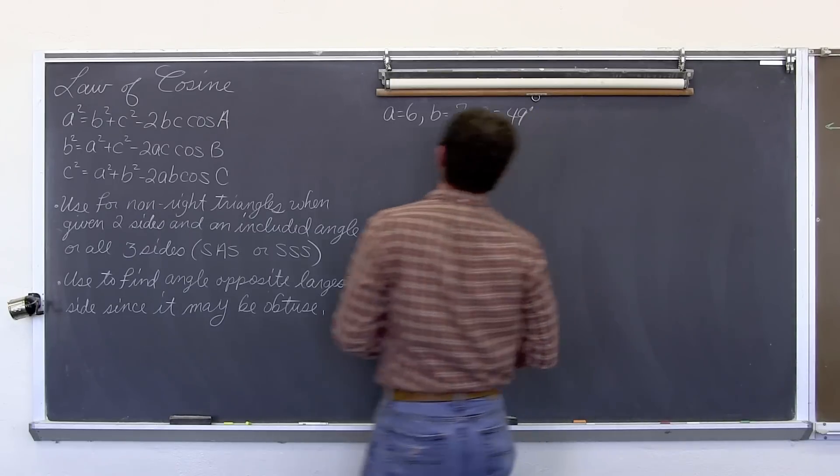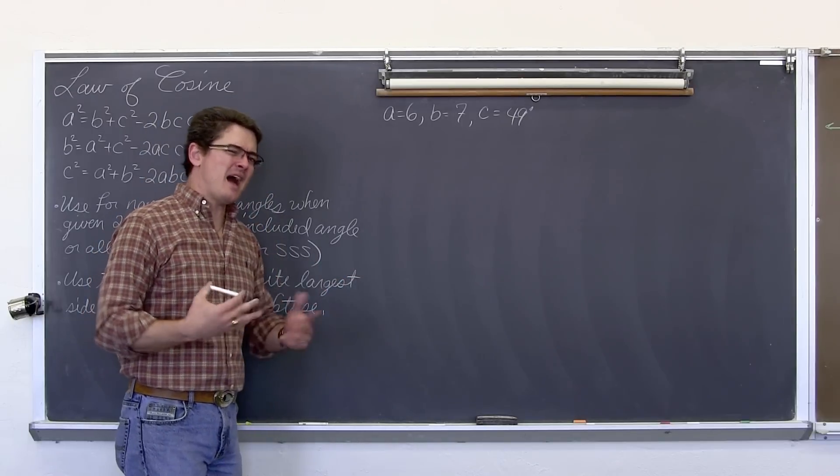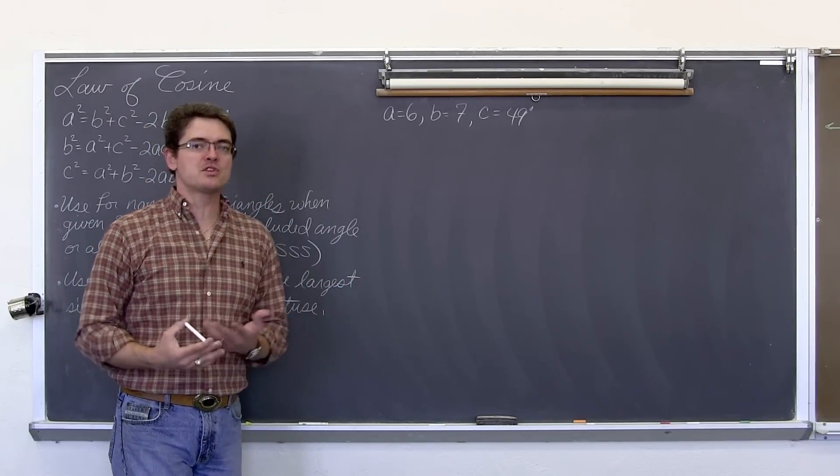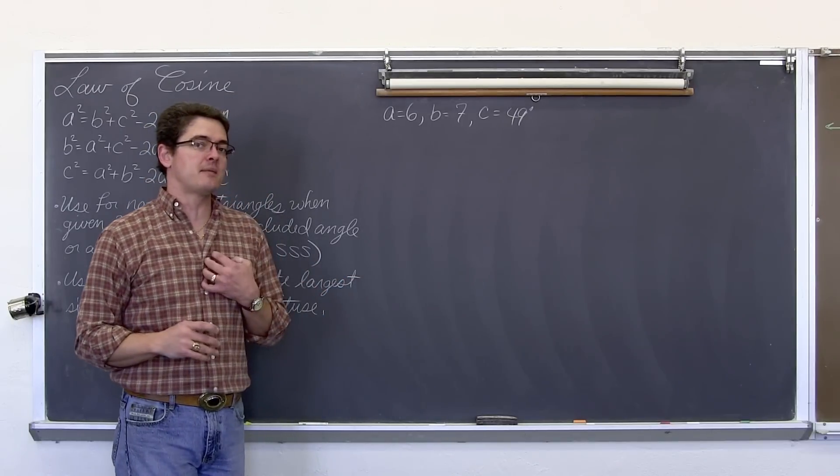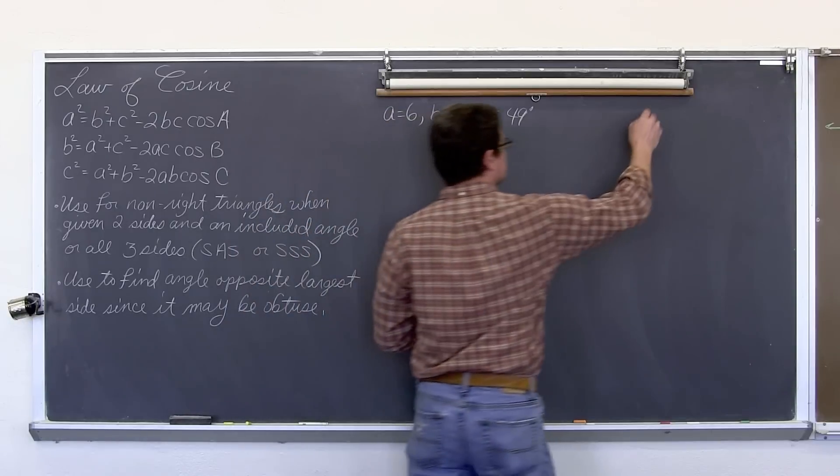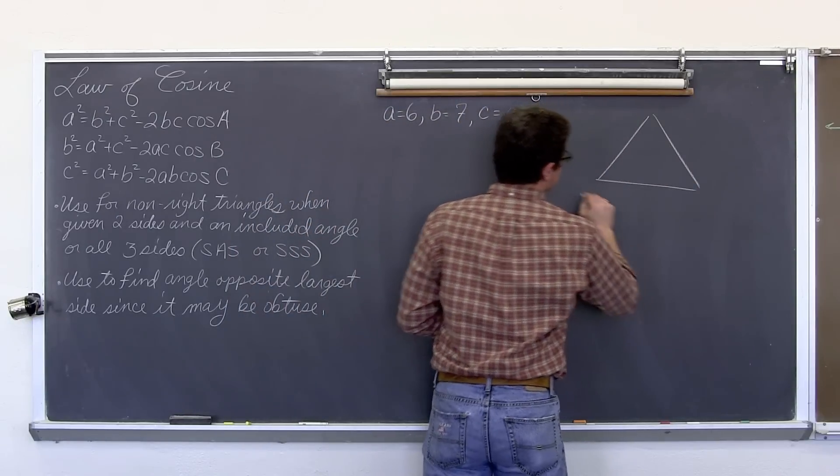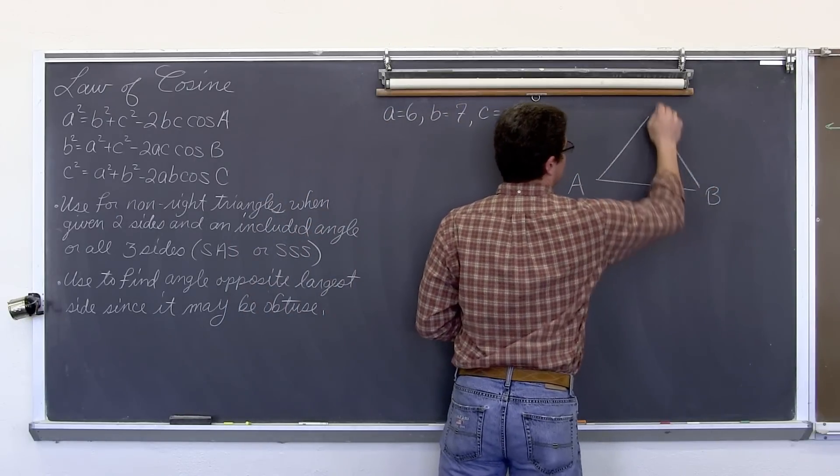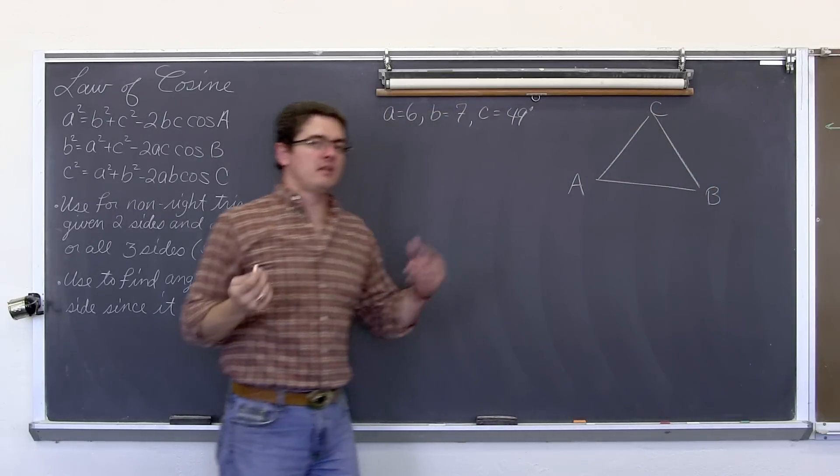So here we have a couple of measurements, and again we are kind of just basically doing geometry here, working with shapes, which means that, at least as far as I am concerned, you should always have a picture. So I am not going to worry about drawing this to scale, I just want a place where I can put my numbers down. So triangle ABC.